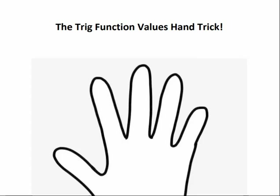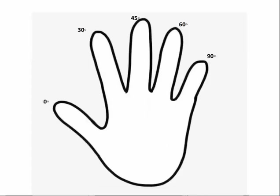In order to do that, hold up your hand just like you see here, and let's pretend like it is marked up like this. With your thumb being zero degrees, your pointer finger is 30 degrees, your middle finger represents 45 degrees, the ring finger is 60 degrees, and the pinky is 90 degrees.